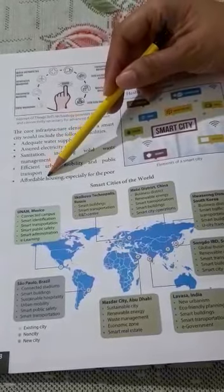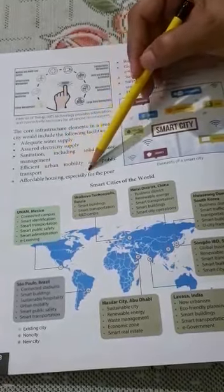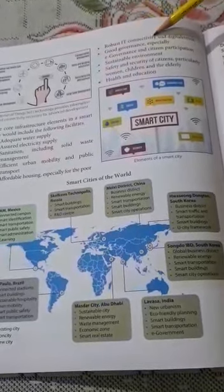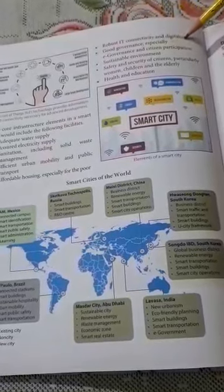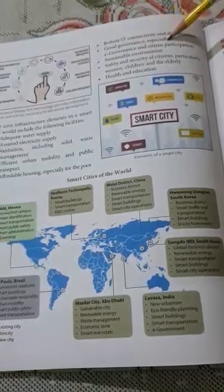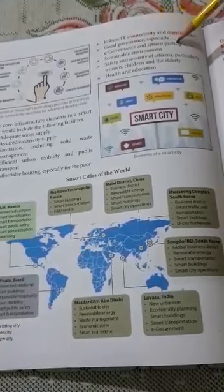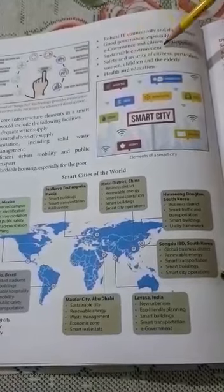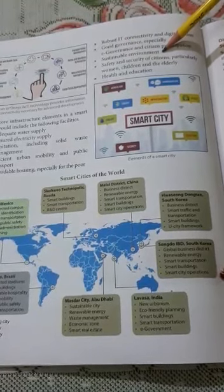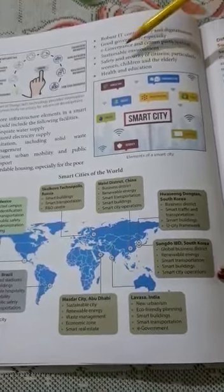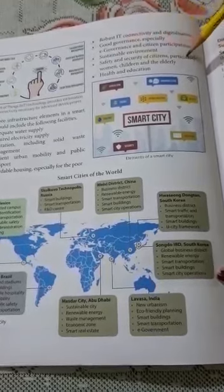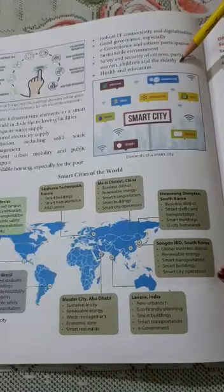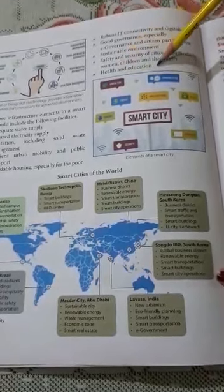Further core infrastructure elements include: affordable housing especially for the poor, robust IT connectivity and digitalization, good governance especially e-governance and citizen participation, sustainable environment, safety and security of citizens particularly women, children and the elderly, and lastly, health and education.